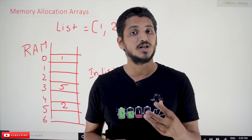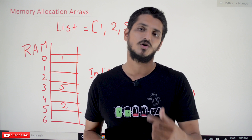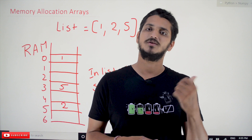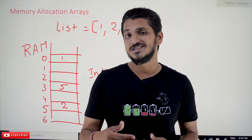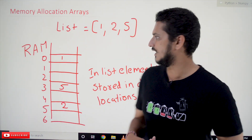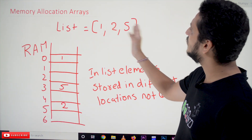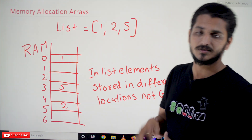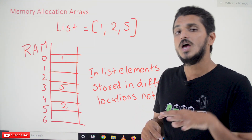Let's understand how memory is allocated to a list — let's refresh that concept. We'll take an example: a list with elements 1, 2, and 5. So how is memory allocated to this list?